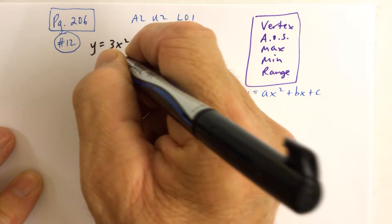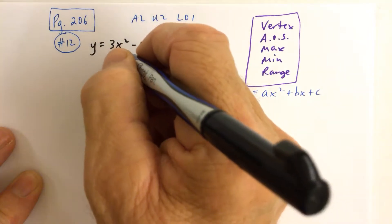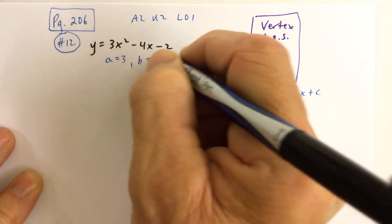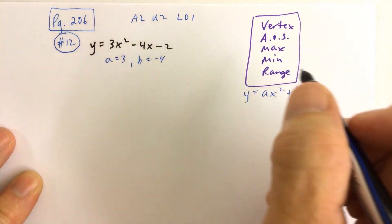In other words, if we want to figure out what the vertex is, we first need to realize that a is 3 and b is negative 4. The c value is negative 2, but we don't need that right now.